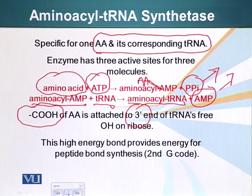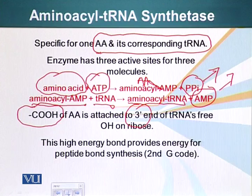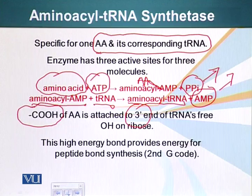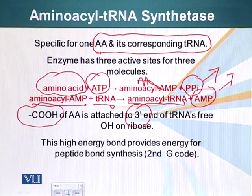This is a very high energy bond, and it supplies the energy for the synthesis of polypeptides or proteins. This mechanism is very well conserved because if there were any mistakes made here, it will result in a major catastrophe for that organism. So this is also correctly referred to as the second genetic code. The first is the codon specifying a specific amino acid; the second genetic code is which specific tRNA binds a specific amino acid.